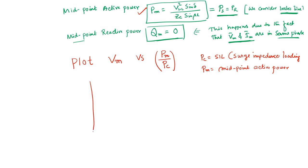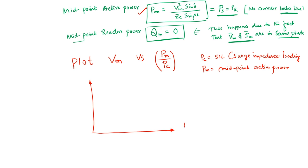Next, we will plot the midpoint voltage with respect to the ratio of PM to PC, where PC is the surge impedance loading and PM is the midpoint active power. We will do this derivation right now.